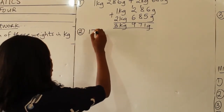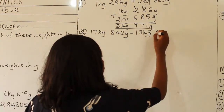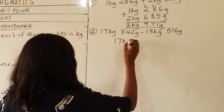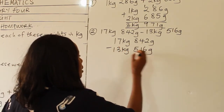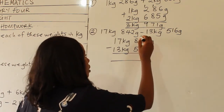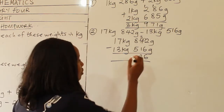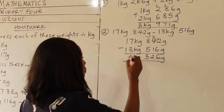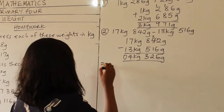Question 2: 17 kg 842 g minus 13 kg 516 g. Subtracting the grams: 2 minus 6 cannot go — borrow, leaving 13; 12 minus 6 is 6. 3 minus 1 is 2. 8 minus 5 is 3. For kilograms: 7 minus 3 is 4, and 1 minus 1 is 0. Our answer is 4 kg, 326 grams.